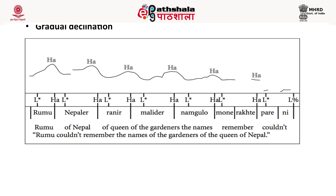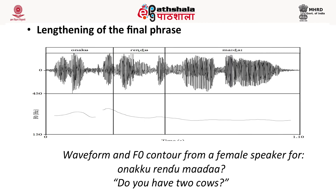In gradual declination, tones gradually decline in height towards the end of the intonational phrase. As shown in the example, the high tone is decreasing in amplitude towards the end of the utterance, although the tone itself remains the same. For lengthening, it is also found in most languages that the final accentual phrase or intonational phrase is lengthened towards the end. In the example, 'do you have two cows' — the final word 'cows' at the end shows lengthening.